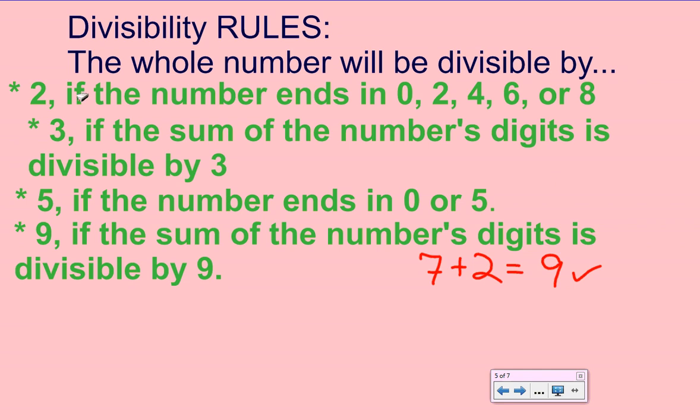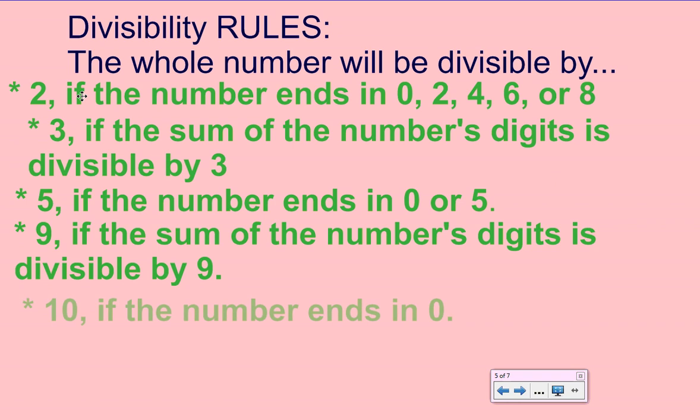Our last rule is the divisibility rule for 10. This one's really easy. All you have to do is look at the last digit — if it ends in a 0, then you know the number is divisible by 10.